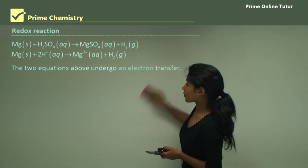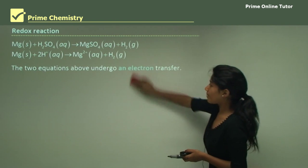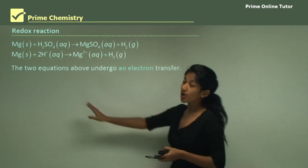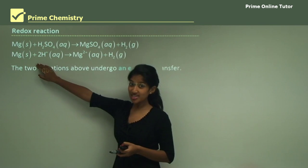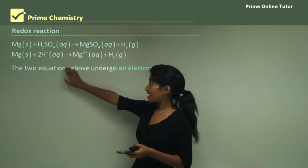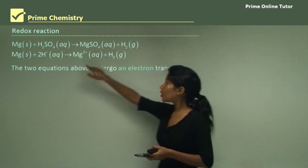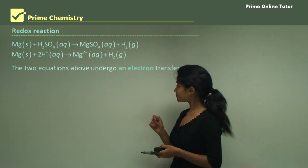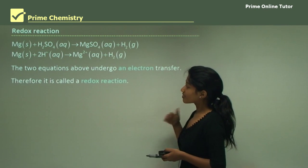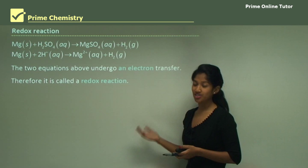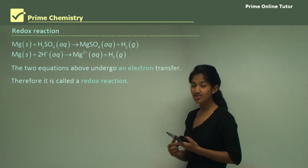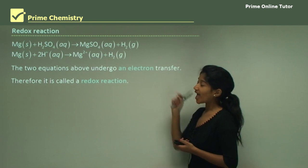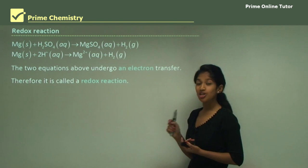The two equations above undergo an electron transfer. You can see magnesium losing electrons and giving them to the hydrogen, which forms hydrogen gas. Therefore it is called a redox reaction. We have called it an electron transfer reaction.